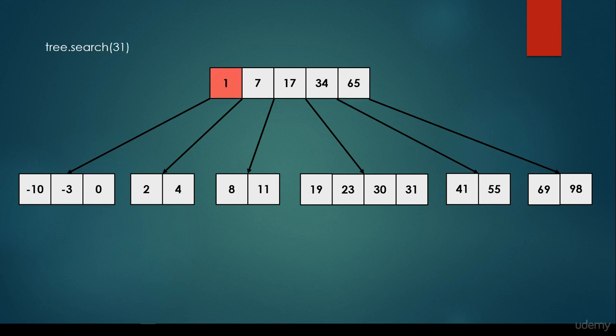So we would like to find, for example, 31. We start at the first item in the root node. We keep going because 31 is greater than 1, it's greater than 7, it's greater than 17 but it is smaller than 34.